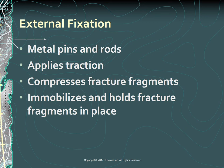An external fixator is a metallic device composed of metal pins inserted into the bone and attached to external rods to stabilize the fracture while it heals. It can be used to apply traction or to compress fracture fragments and immobilize reduced fragments when the use of a cast or other traction is not appropriate. The external device holds fracture fragments in place similar to a surgically implanted internal device.